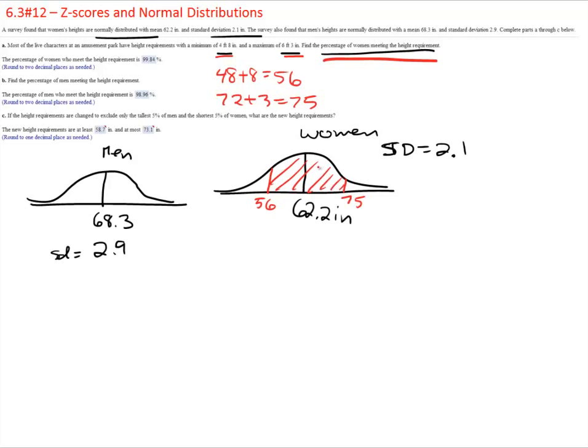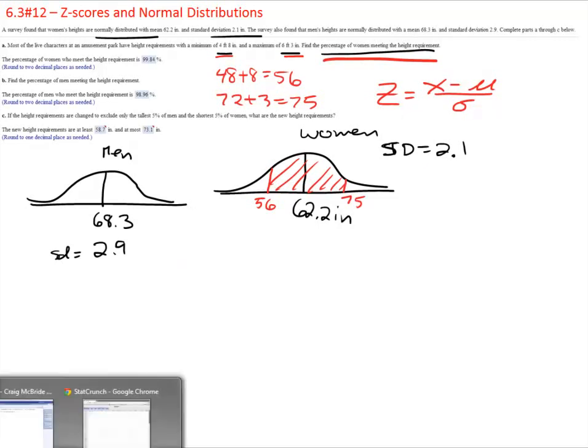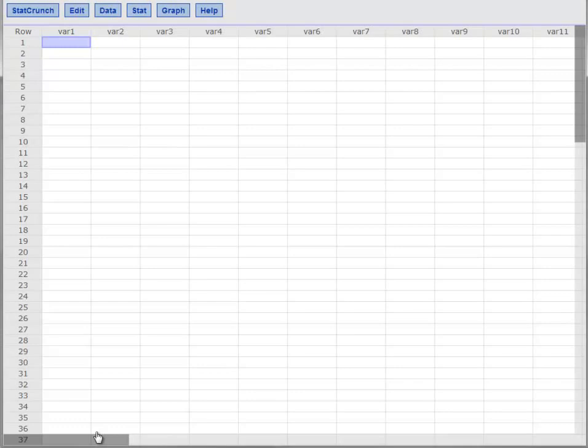You can use the formula, the z-score formula. Z equals x minus mu all over sigma. So x minus the mean divided by standard deviation. That will give you a z-score. Then you can look a z-score up in a table and it will give you area to the left. Then you can look up this one, area to the left, do the difference of the two. Or you can just go straight to technology, a lot easier that way. So we will bring up StatCrunch.